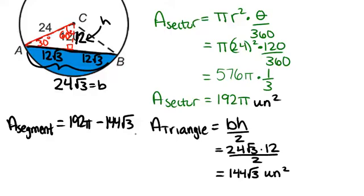And since you can't really combine like terms there unless you want to change everything to decimal approximations, I'm just going to leave my answer like this. So, it should just be 192 pi minus 144 root 3 units squared.